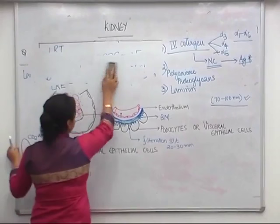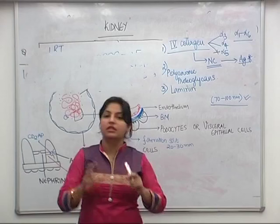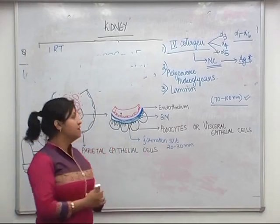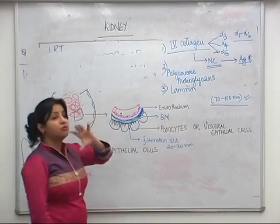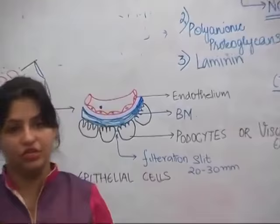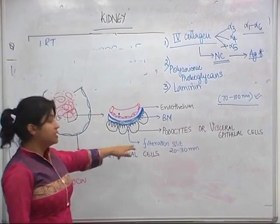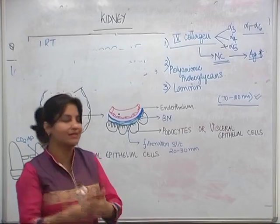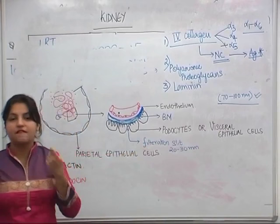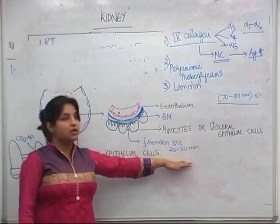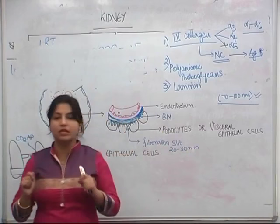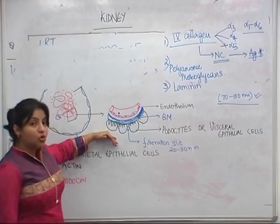Podocytes are visceral epithelial cells that rest on the basement membrane with the help of their feet - that is why they are called podocytes. They are the most important cells playing a role in filtration. The podocytes are separated from each other by small spaces known as filtration slits. The diameter of these filtration slits is 20 to 30 nanometers.